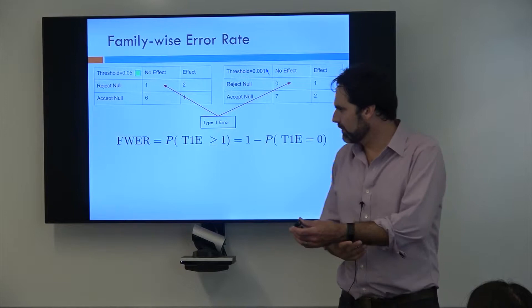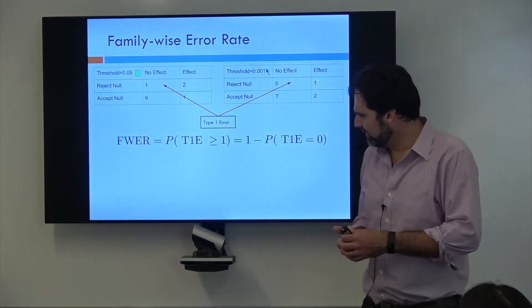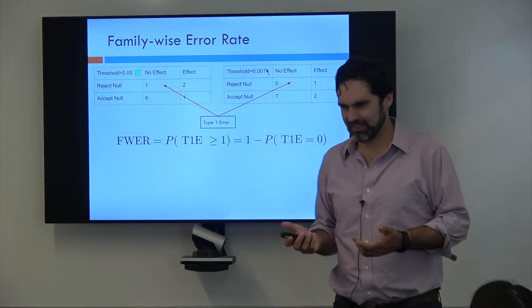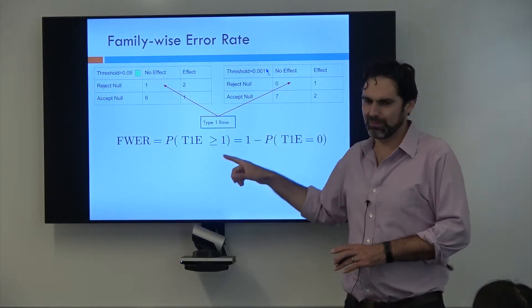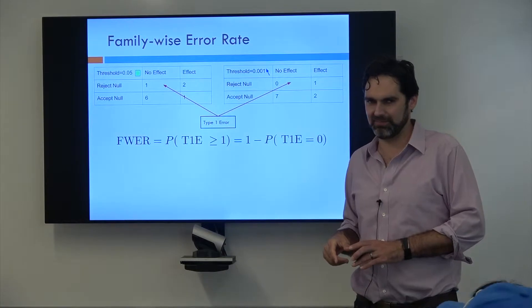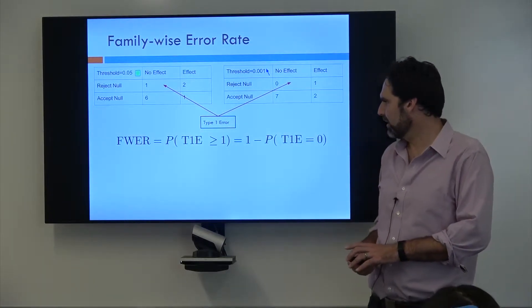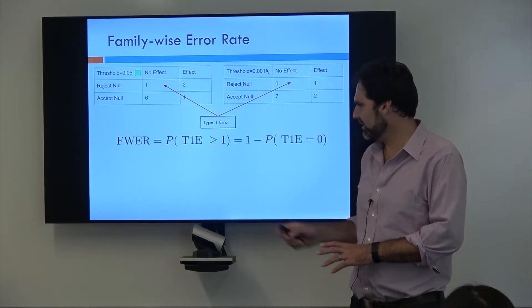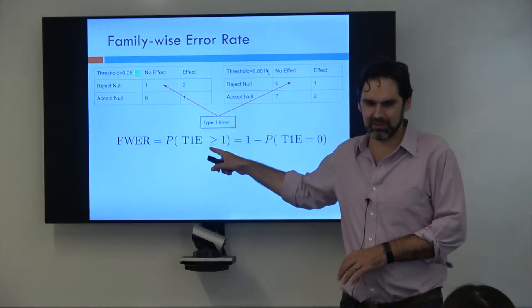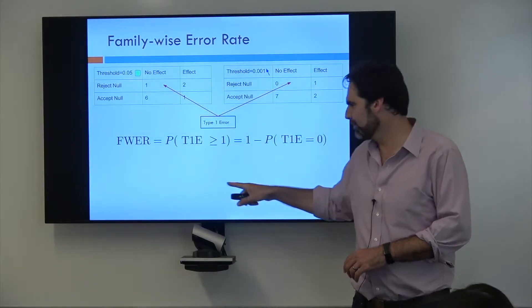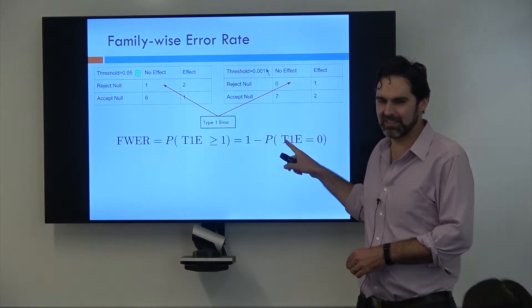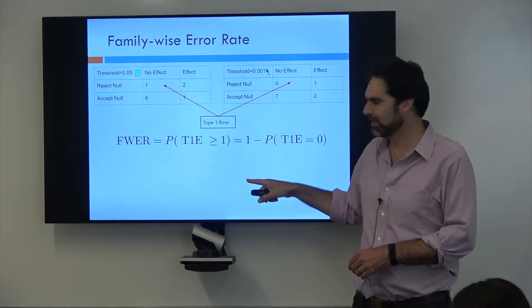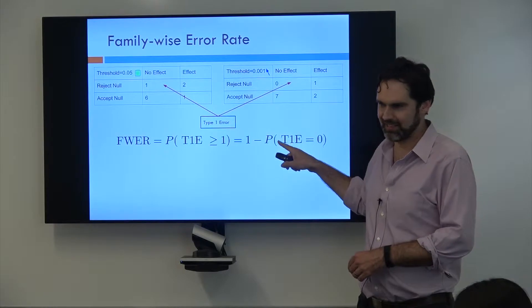Your family-wise error rate isn't really a rate, it's actually a probability. It's the probability of having one or more type 1 errors. And statistically, one or more type 1 errors, that probability is really hard to calculate. But conveniently, if we do one minus the probability of no type 1 errors, we get the same value. And this is much easier to calculate.